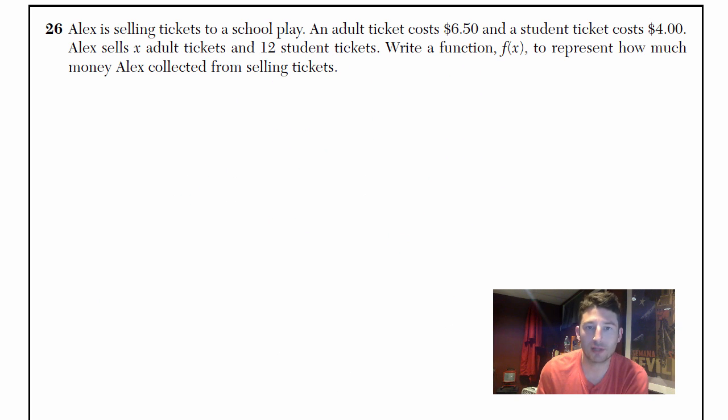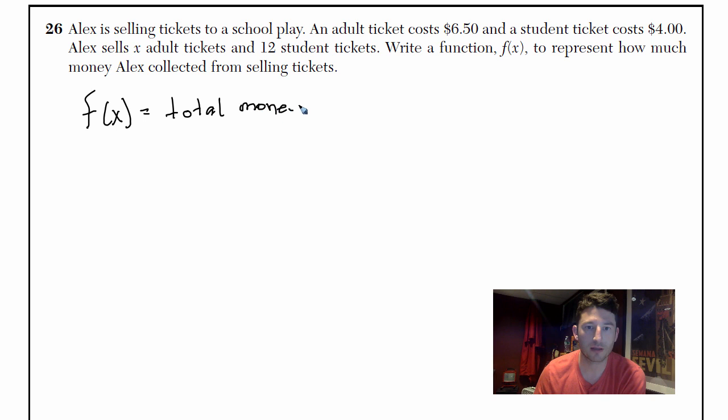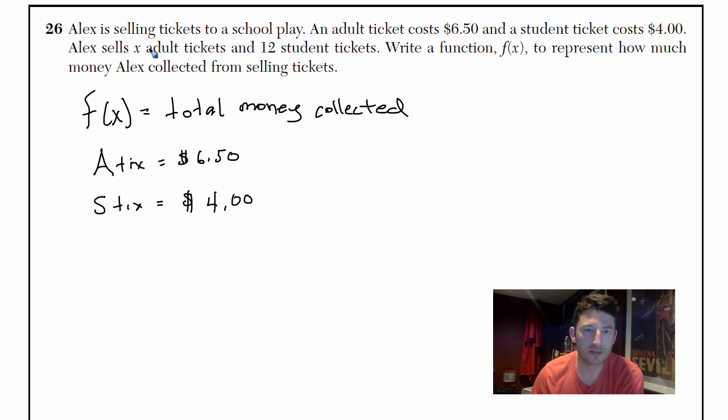This one says Alex is selling tickets to a school play. An adult ticket costs $6.50 and a student ticket costs $4. Alex sells x adult tickets and 12 student tickets. Write a function f of x to represent how much money Alex collected from selling the tickets. So f of x, it's got to be total money collected. Let's write what we know. We know that the adult ticket is $6.50. And the student ticket is $4.50.